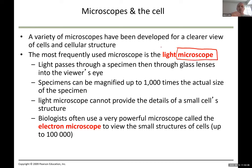A microscope is made up of a lot of parts. There are two main types: there is the light microscope and there is the electron microscope.